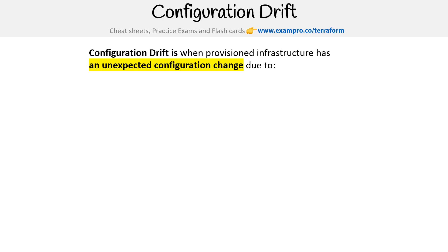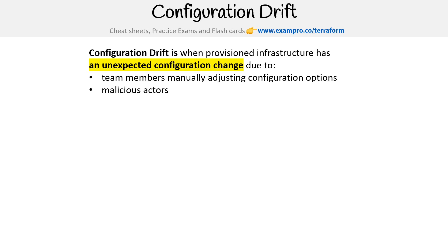Configuration drift is when provisioned infrastructure has an unexpected configuration change due to team members manually adjusting configuration options, malicious actors trying to cause downtime or breach data, or side effects from API SDKs or CLI. For example, you've written some code that uses a CLI in a bash script and it does something you did not expect to happen.